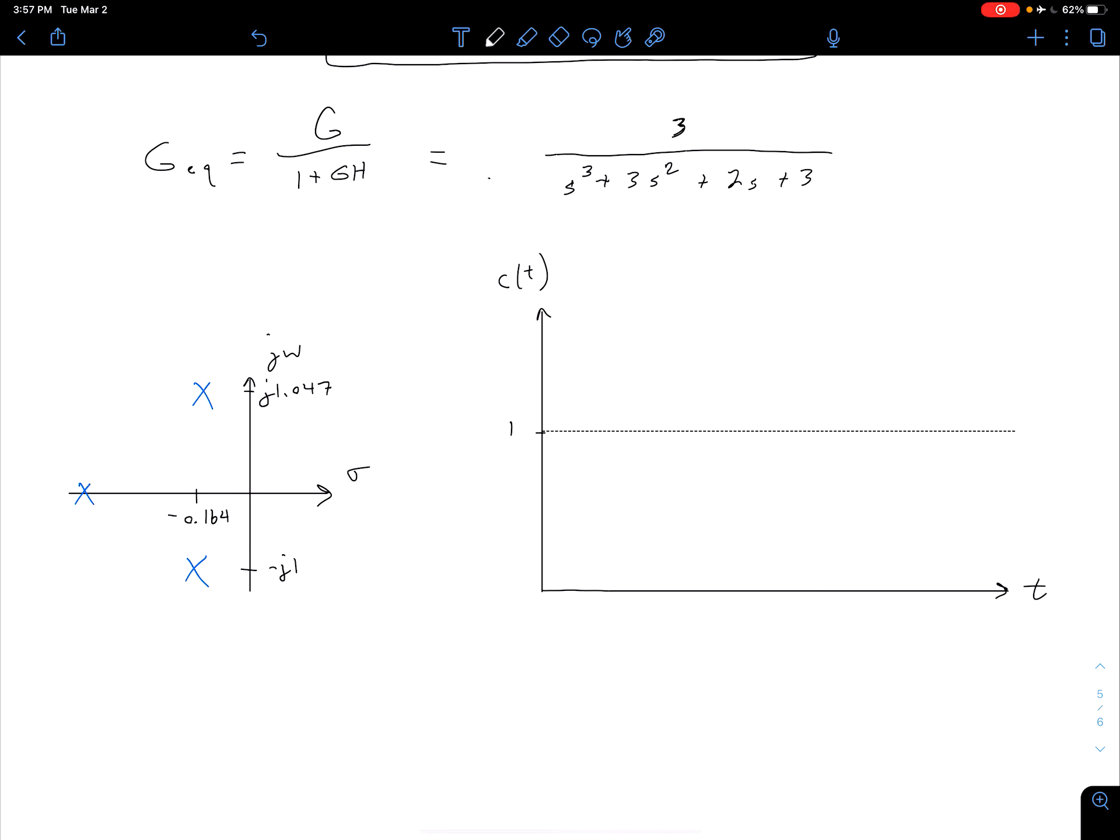So this is minus j 1.047. So notice this isn't to scale of course. And then this third real pole over here is going to be negative 2.672.